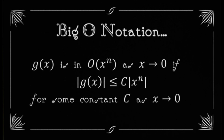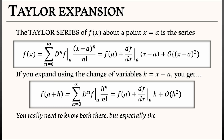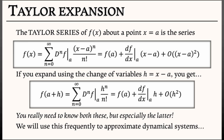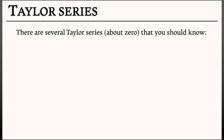Big O notation is not essential for what we're going to do — it's merely a convenient language. What is essential is Taylor expansion. You do need to know those formulas, especially the latter one involving a polynomial in h. We're going to use this very frequently to approximate functions arising in dynamical systems. There are some Taylor series expanded about zero that are just worth knowing, worth memorizing, and having at the ready.